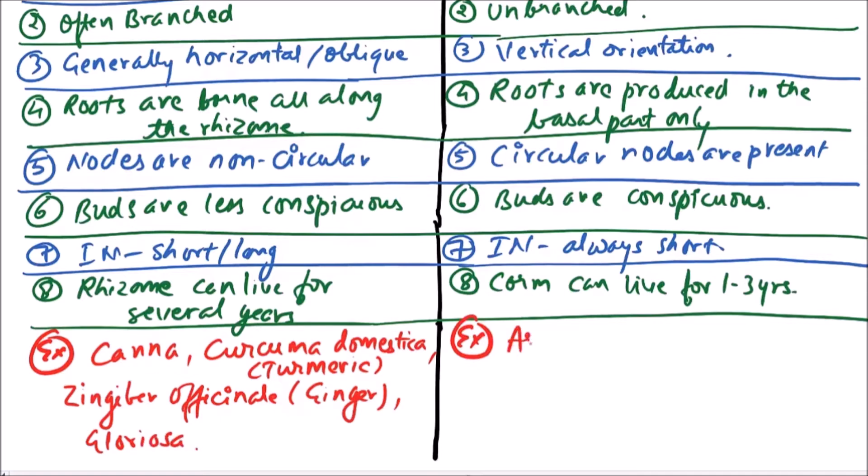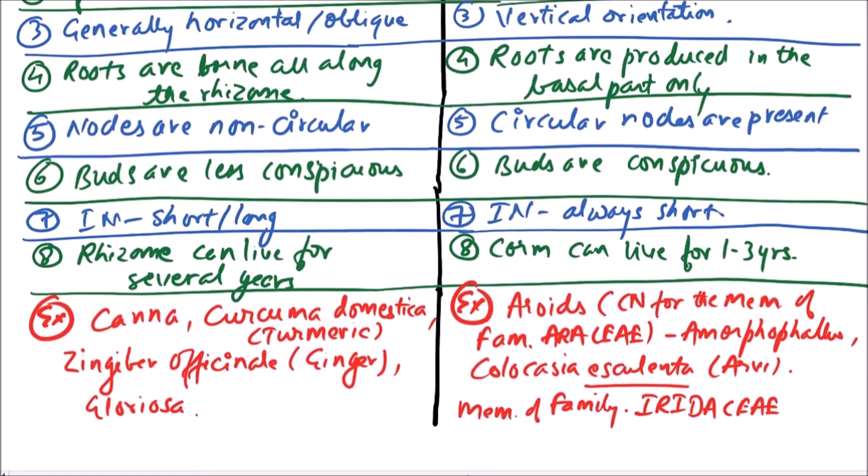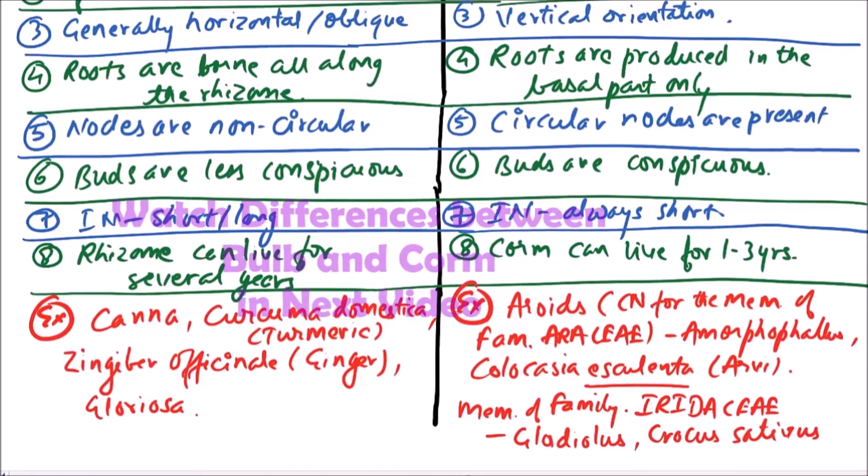The examples of corm include aroids. Aroids is actually common name for the members of family Araceae. Members of family Iridaceae also develop corms, which are Gladiolus and Crocus sativus.